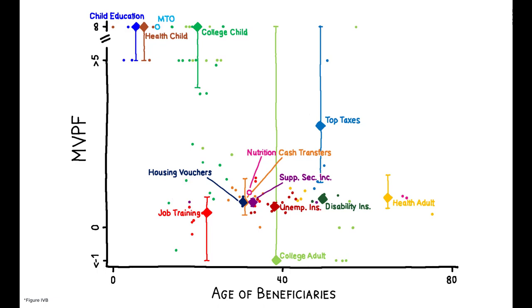Finally, while policies targeting adults tend to have lower MVPFs, there are two notable exceptions: reductions in top marginal tax rates, and policies that have large spillovers to children.